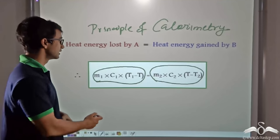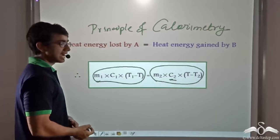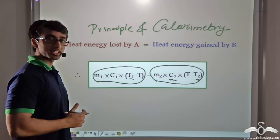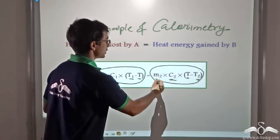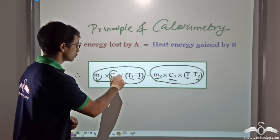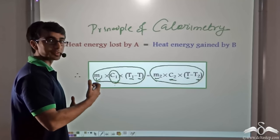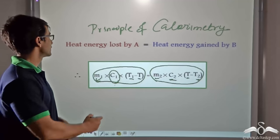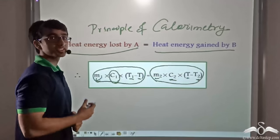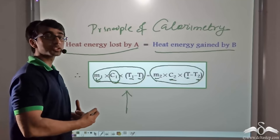If we need to find an unknown quantity such as C1, and we are given the masses of the two bodies, the specific heat capacity of the second body, and the initial temperatures, we can use a thermometer to find the final temperature T. Since we already know M1 and M2 from measurement, we can solve for the unknown C1. Similarly, any unknown quantity can be found if all other values are known, using the principle of calorimetry: heat energy lost by the hot body equals heat energy gained by the cold body.